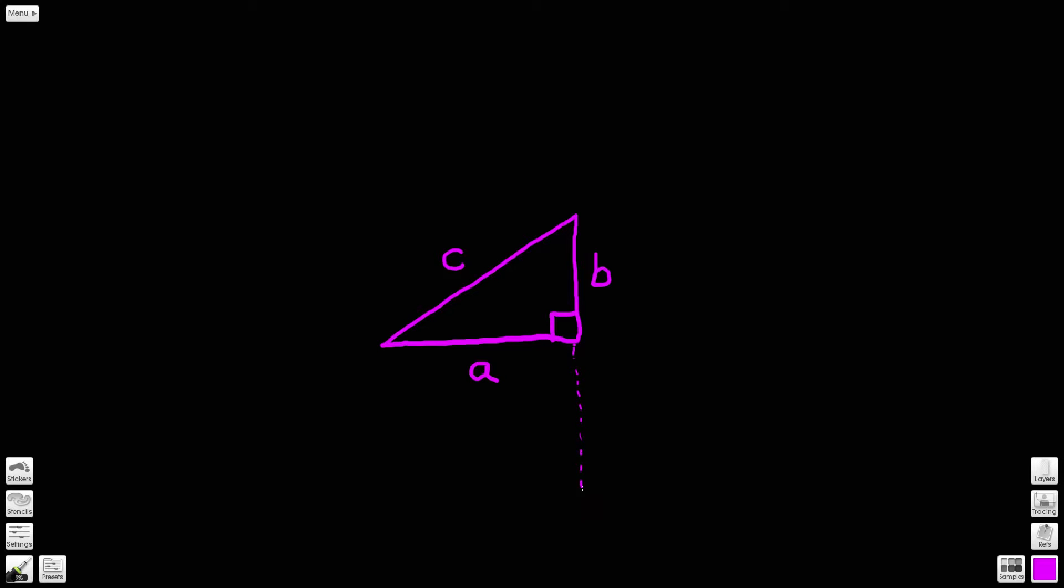a square on it, something that looks a bit like this, and if we take side b and draw a square on it we get something that looks like that, and if we take side c and draw a square on it, it will look something like that.